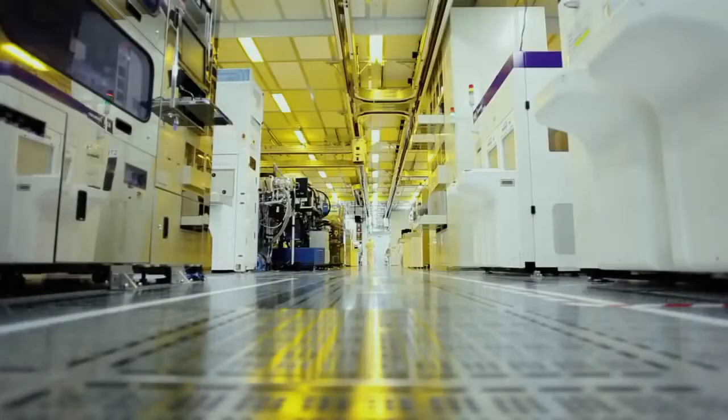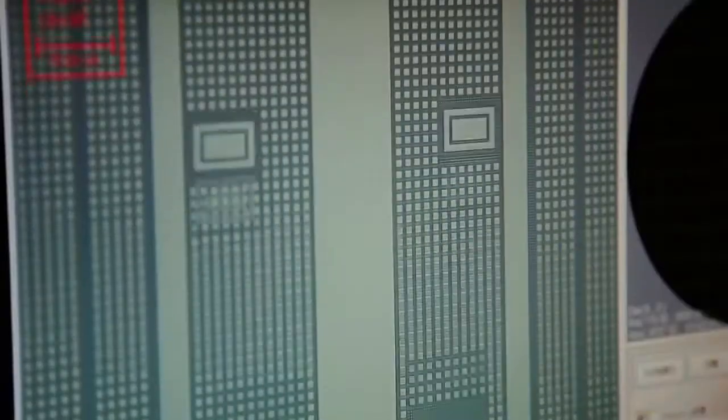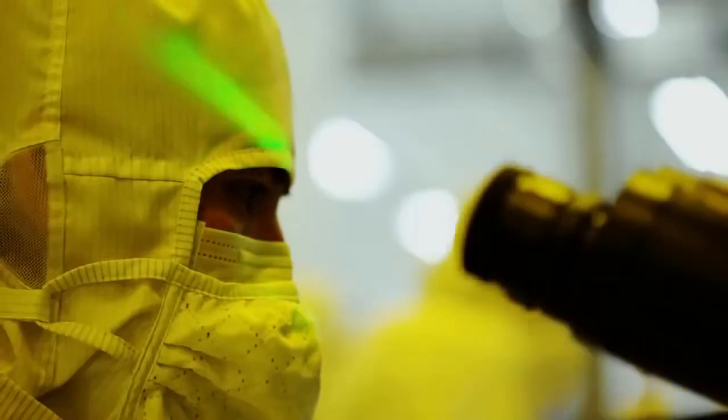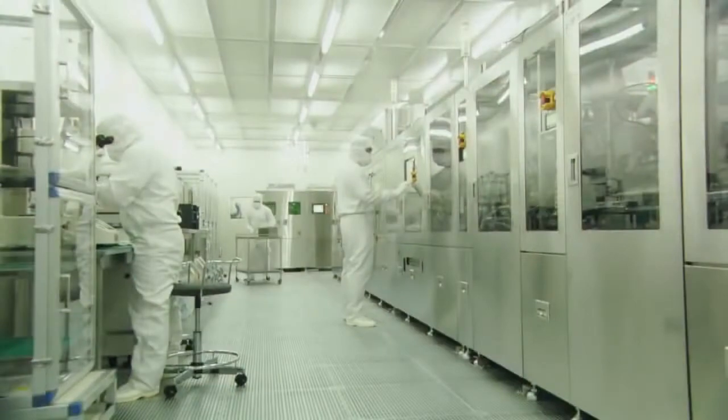Canon produces its image sensors in a clean-room environment in which even a single speck of dust is unacceptable, and the sensors do not come into contact with outside air. Using a method similar to semiconductor chip production, micrometer-order circuits are etched onto large disc-like silicon wafers. Each sensor is cut from the wafer.